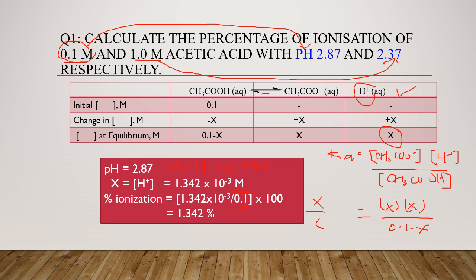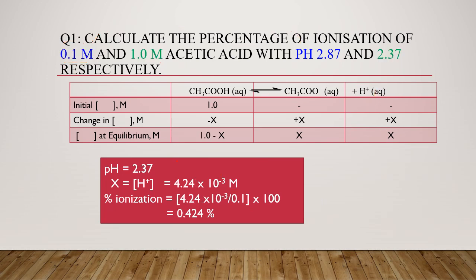Using the same method, proceed for the second part, which is 1 molar acetic acid with pH 2.37. You get the answer 0.424%. The concept is exactly the same, but this one is changed to 1. And then the concentration for this pH, for this concentration is 2.37. So the x value is different. So x over C times 100, you get 0.424%.